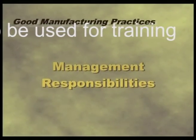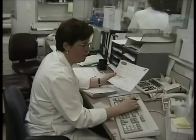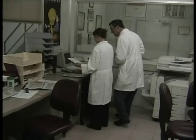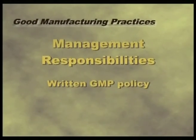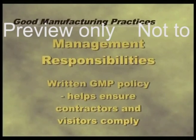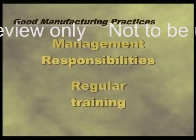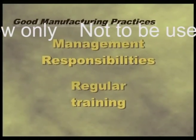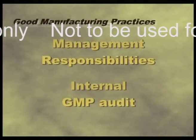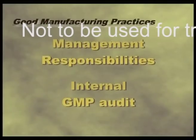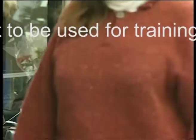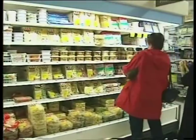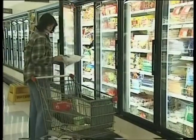Company management is responsible for implementing and maintaining good manufacturing practices. Managers should assess and act upon anything that may pose a risk to the safety of the company's product. It is also in the best interests of the company to have a written GMP policy. A written policy will help ensure that contractors and visitors to the plant comply with GMPs. Regular training sessions for staff also help ensure that they maintain the skills required to do their job safely and hygienically. Management should also set up an internal order procedure to ensure GMPs are being followed. Your business must have in place a satisfactory system to handle the worst case scenario — the recall of unsafe food. Such a system is crucial in minimising risks to public health and consumers. A professional recall procedure will also protect the interests of the company and its employees.